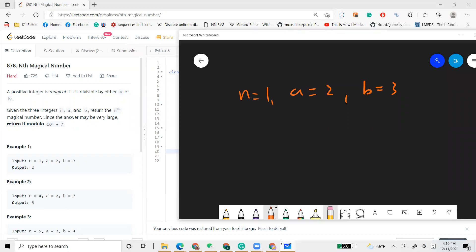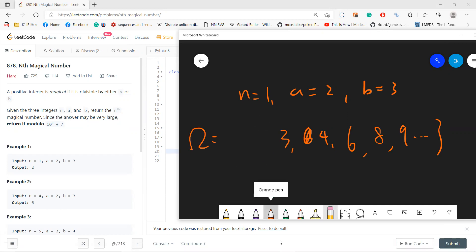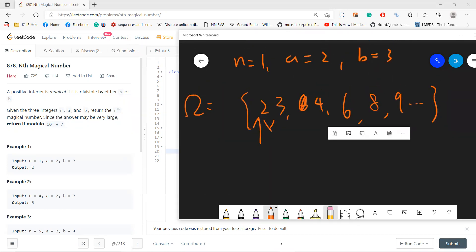I think you should start from n equals, you should start from 1, right? So the set which is divisible by either a or b is 1, 2, 3, 4, and 6, and then maybe the next is 8, and then 9. So 1 is not okay, right? So you should start from 2. So the first one is 2.